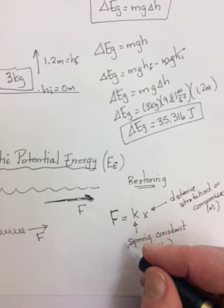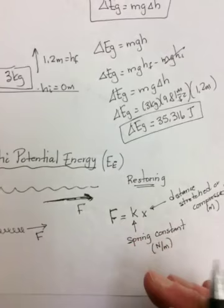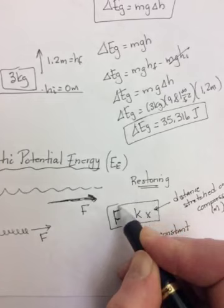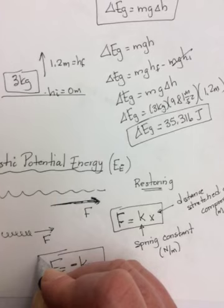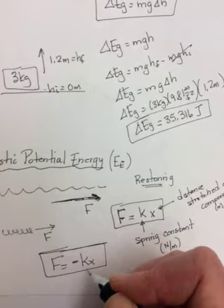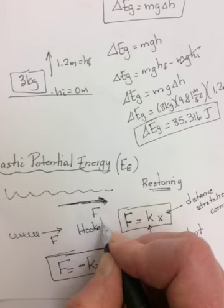Again, the spring constant tells us how big, how heavy-duty the spring is, how hard it is to stretch it. You will see this is the force that I need to stretch the spring. Sometimes you will see the equation written as F equals negative KX, and when you see this, it's the force that the spring needs to put on itself to bring itself back to its original shape.